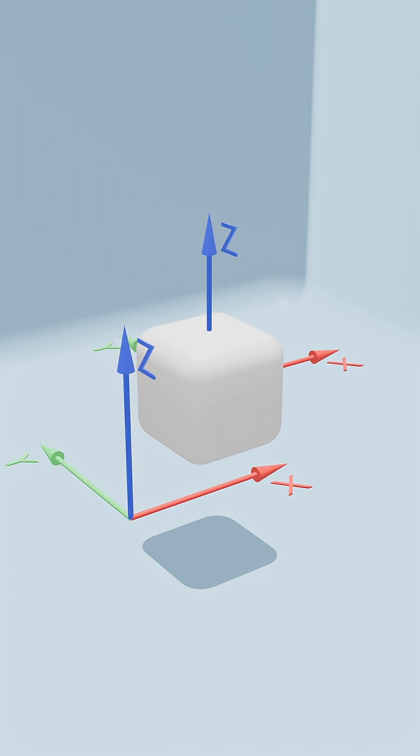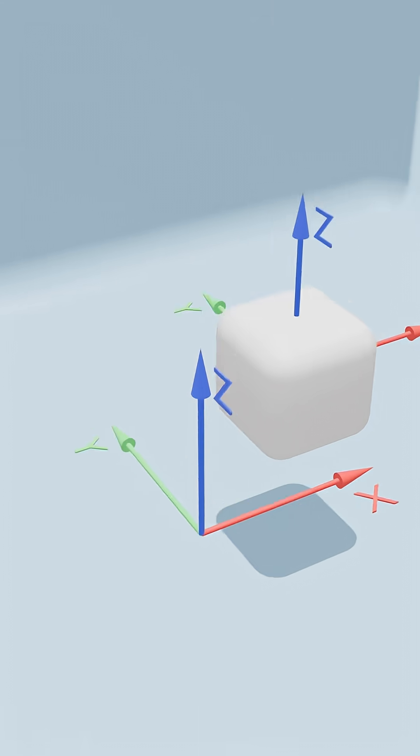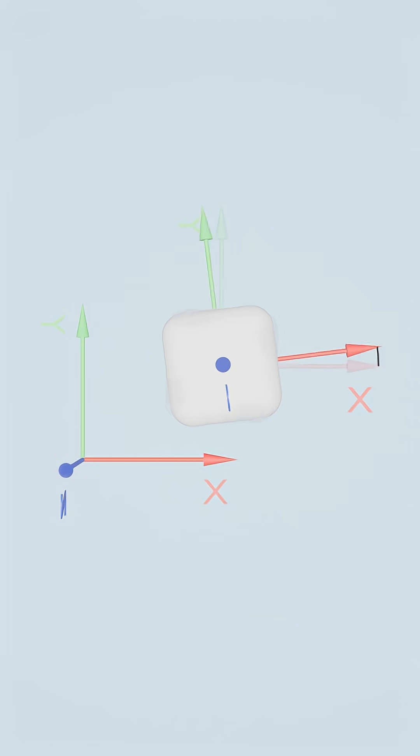To model this rotation, we will follow a z, y, x rotation sequence. First, we rotate the cube about the z axis by some angle psi. When we do this, notice that the x and y axes of the cube have been rotated by psi, creating a new local axes x prime and y prime.